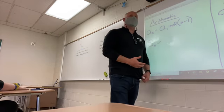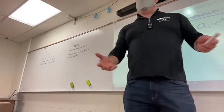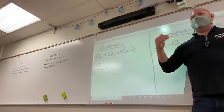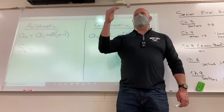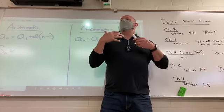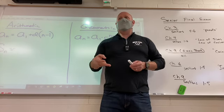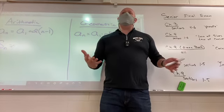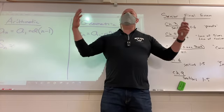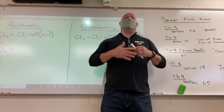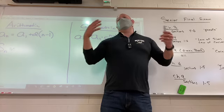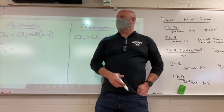The example question we did yesterday was the auditorium. We have 20 seats in the first row, 22, 24, 26, 28. It was an arithmetic pattern, right? Because we're adding two, add two, add two. But we don't want to just know how many seats are in each row. We want to know how many seats are in the whole auditorium. So it's not just finding the terms, it's also adding them together, right?